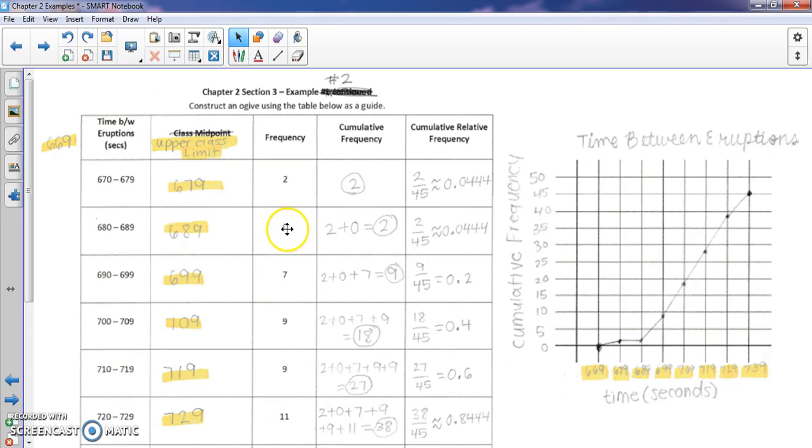The next one, I'm going to do 0 plus 2. That will give me the cumulative frequency of 2. The next one is going to be 7 plus 0 plus 2 is 9. Or alternatively, I can just take that class and add the previous cumulative frequency. So 7 plus 2 is 9.